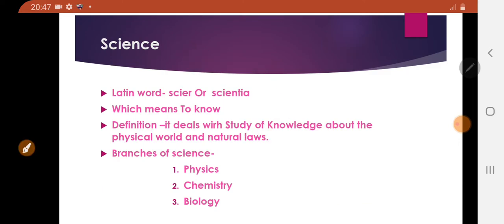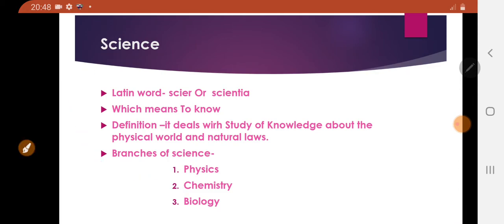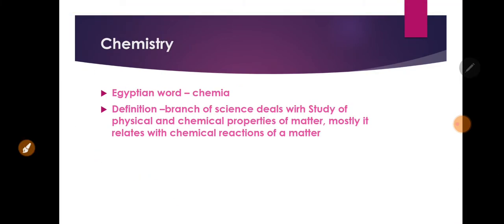What are the branches of science? Physics, chemistry, and biology are the branches of science. So we are going to discuss about chemistry.